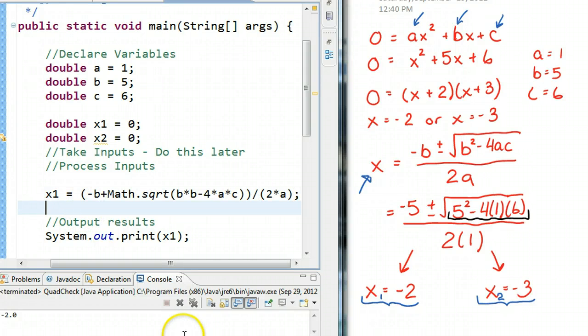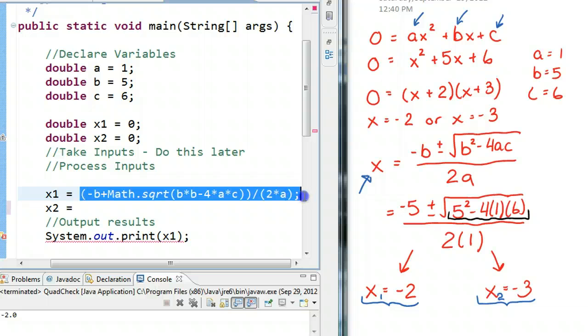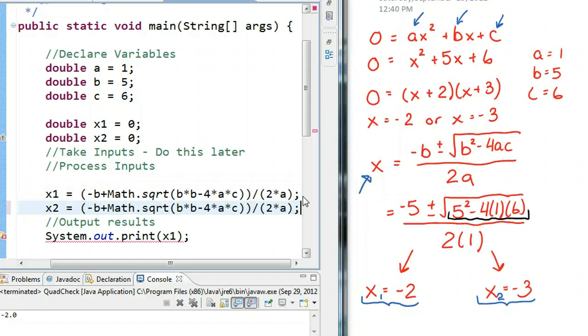So, let's calculate x2. So, x2 equals, and let's just copy this whole thing, and we're going to paste it again. And, instead of adding b, we're going to minus b. And, let's make this a little more user-friendly.